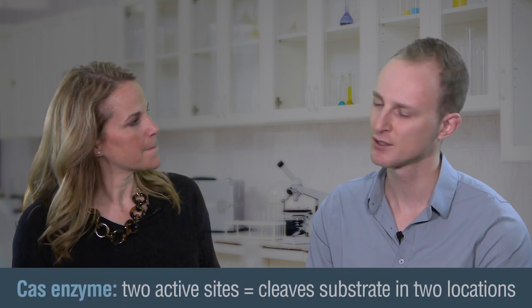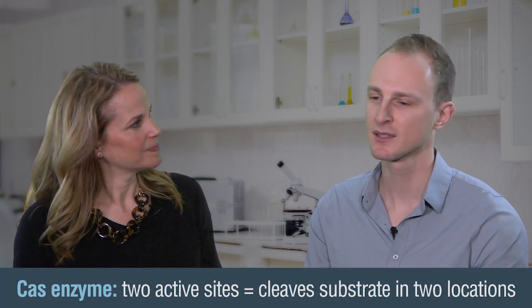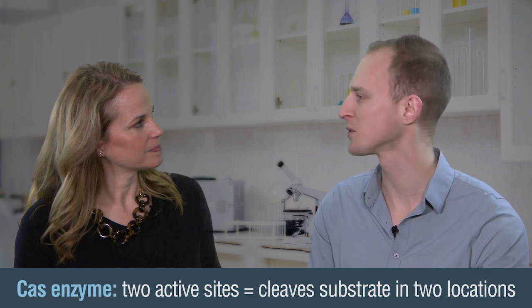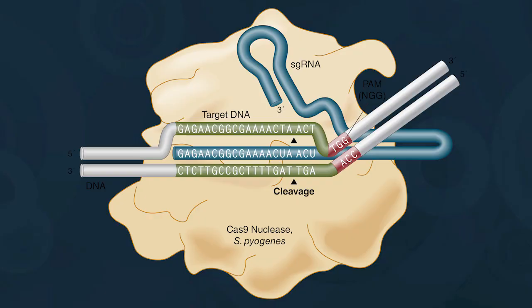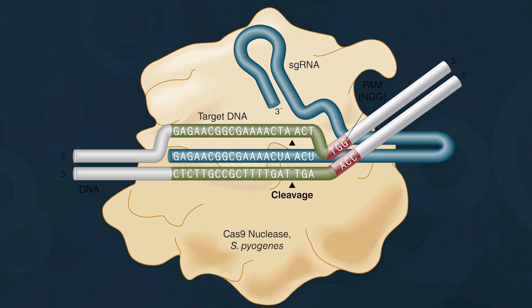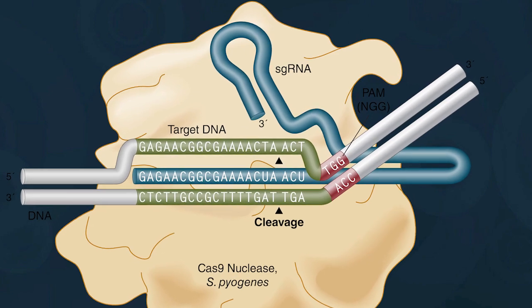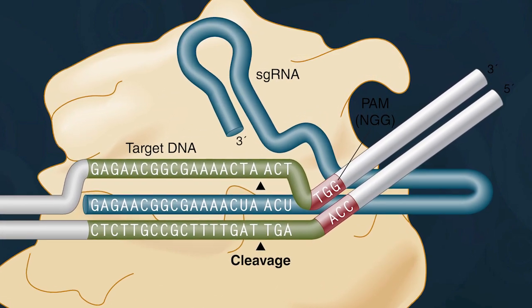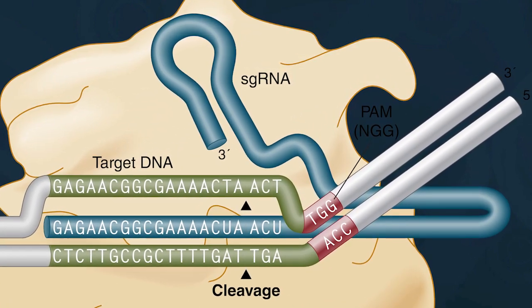And how do they differ from Cas enzymes? They're actually a very different class of enzyme from Cas enzymes. Cas enzymes have two active sites, so they're able to cut in two places on a double-stranded substrate. They still use a nucleic acid guide, so in the case of something like Spy Cas9, which everyone's very familiar with, it uses an RNA guide to bring its activity to that location and then each active site cuts each strand of that double-stranded substrate.